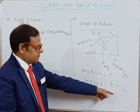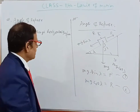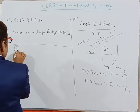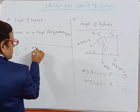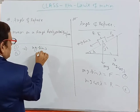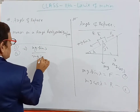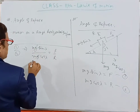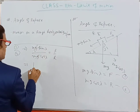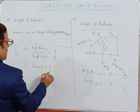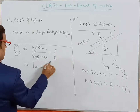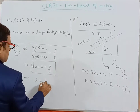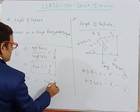Dividing Equation 1 by Equation 2: mg sin lambda divided by mg cos lambda equals F divided by R. The mg cancels, giving tan lambda = F/R. Therefore, lambda = tan inverse of (F/R).